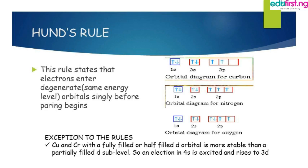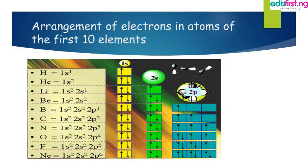There is an exception to this rule in the case of copper and chromium, which have a fully filled or half-filled d orbital, making them more stable. The electron in 4s is excited and rises to the 3d energy level. Regarding suborbital capacities: the s suborbital can take a maximum of 2 electrons, p a maximum of 6, d a maximum of 10, and f a maximum of 14.